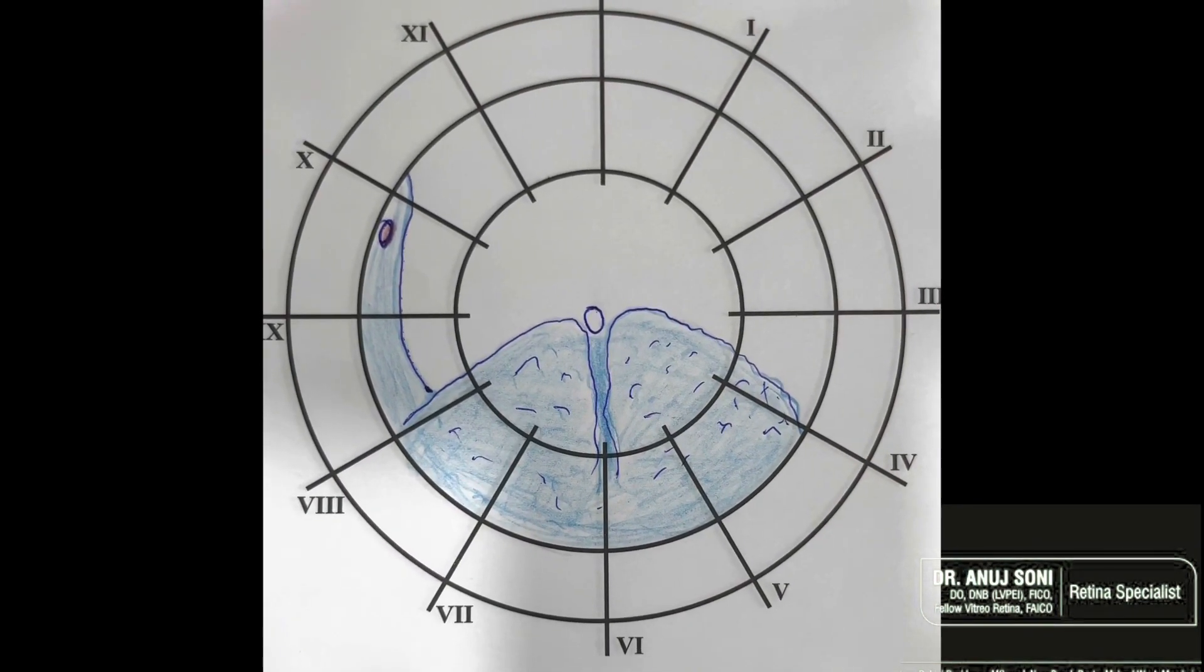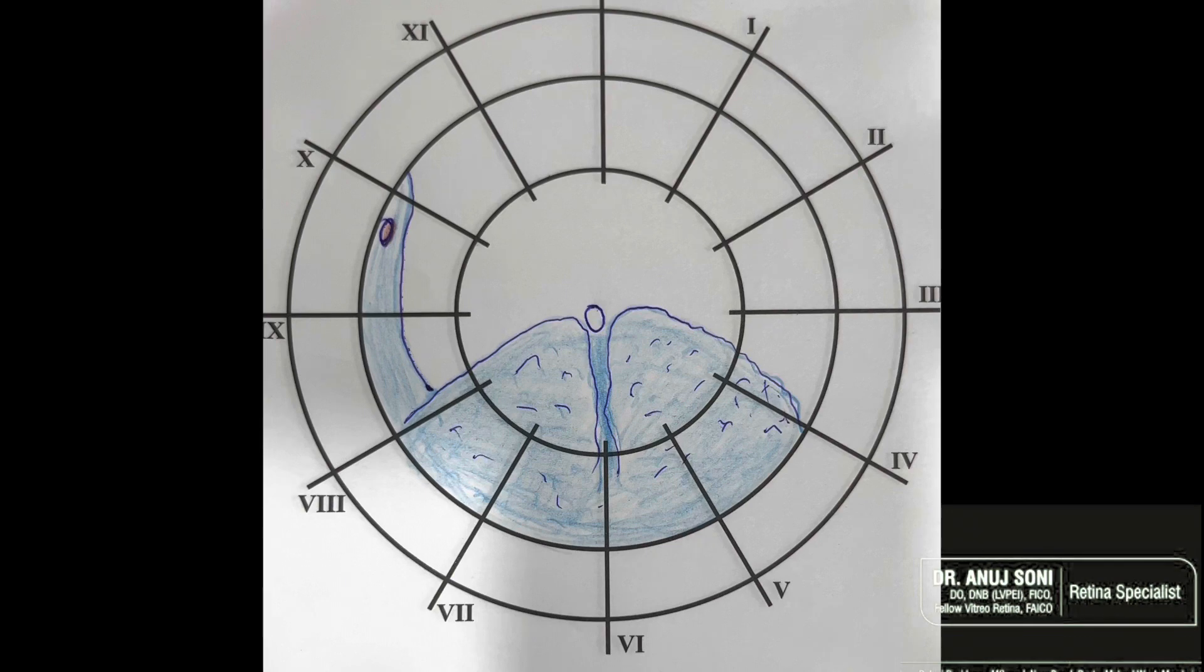Sometimes what appears to be an inferior retinal detachment equal in height on the two sides arises from a superior hole. So you should remember that an RD which is arising from an inferior hole generally progresses slowly and is associated with shallow fluid. So whenever you see a case of rapid progression or a case with bullous inferior detachment, that is the time that the primary hole may be superior.